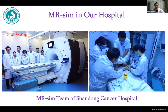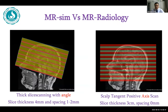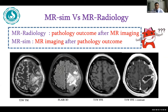Before using MRSIM, we must recognize the difference between MRSIM and MR radiology. For example, the scanning protocol for brain tumors: for MR radiology, we generally use thick-slice scanning with angle, with slice thickness of 4 mm and spacing of 1–2 mm. While for MRSIM, we need to perform isotropic volumetric scanning, with slice thickness of only 3 mm and spacing of 0 mm. For MR radiology, the pathology outcome is obtained after MRI imaging, while for MRI simulation, MRI imaging is achieved after the pathology outcome.